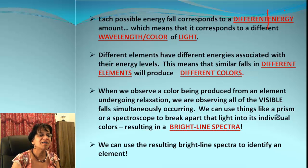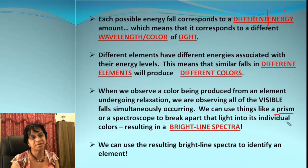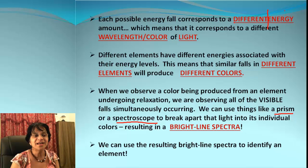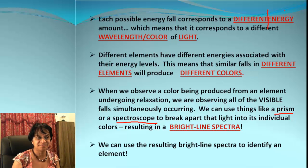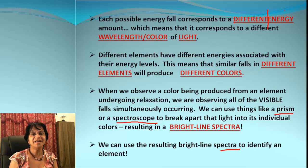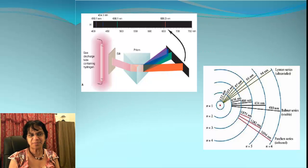Can we break visible light into smaller parts? Of course yes. What we do is pass the light through a prism or a spectroscope, by which it can be broken into individual colors. That's called bright line spectra. And how does the bright line spectra help us? It tells us the identity of the element.